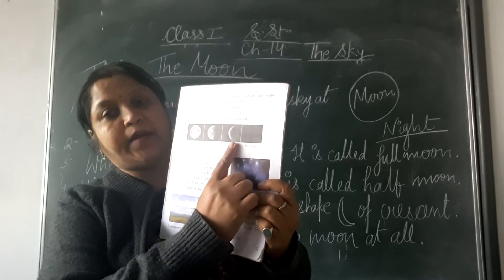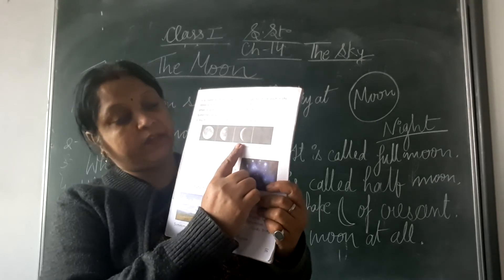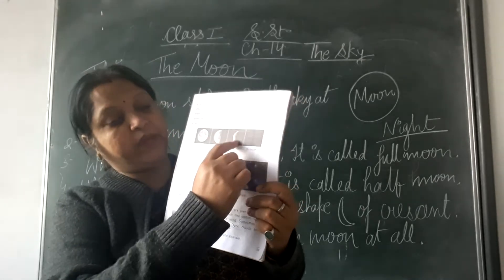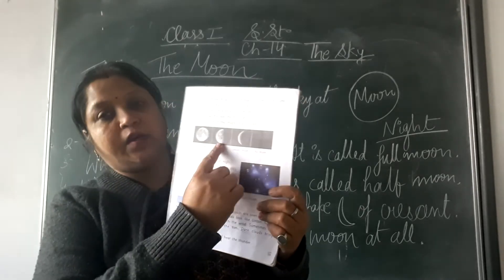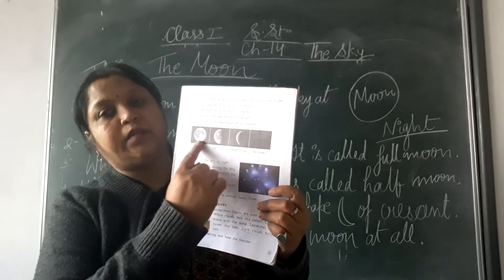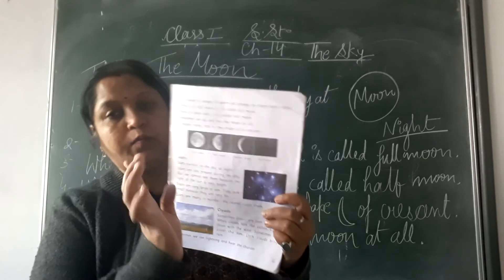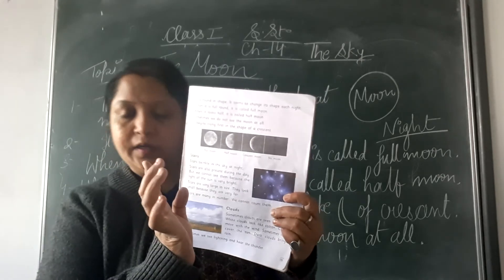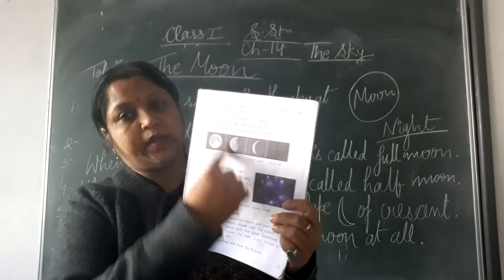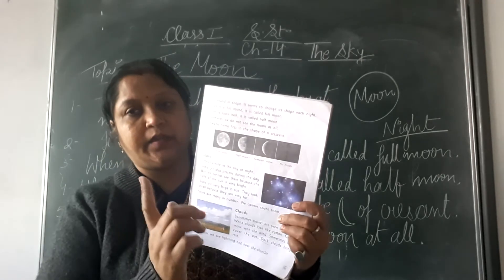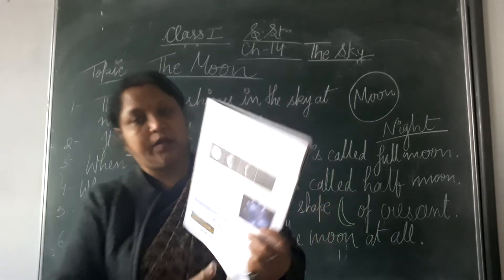And it begins rising first in a crescent shape. Kabhi kabhi jab moon nahi dikhega, uske baad aise chota hoga, then half, then full. Then this same process repeats — yehi process hota hai, yehi chalta rahata hai.